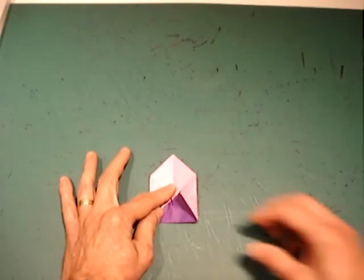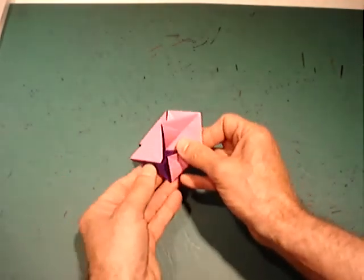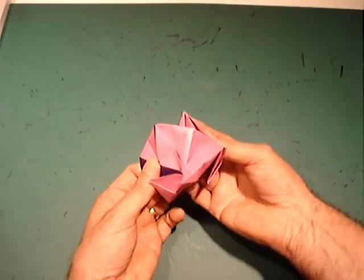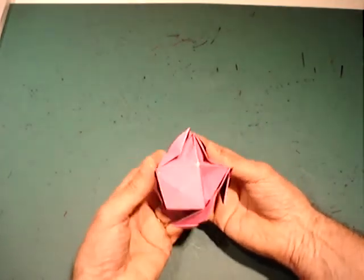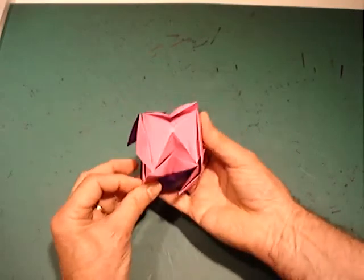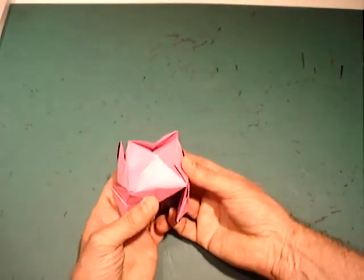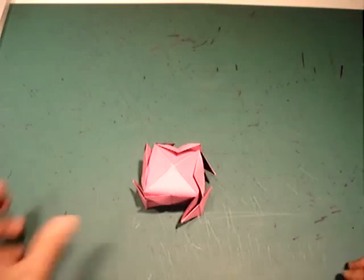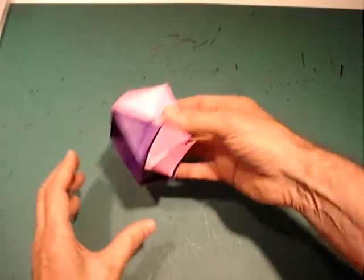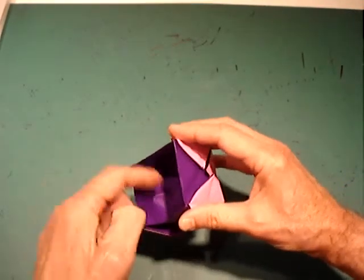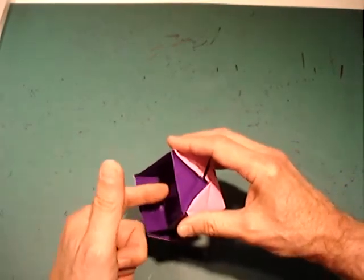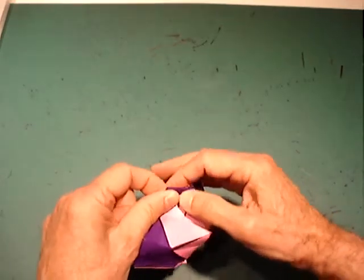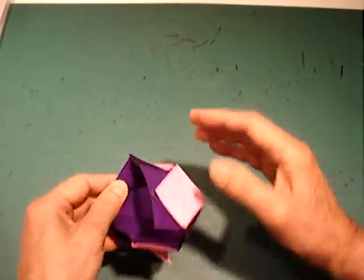Stick your finger in the center of the model and open up to form a house shape. Turn the model over. Pinch two corners to the base of the house together while bringing out the center of the paper. Repeat all along the model.